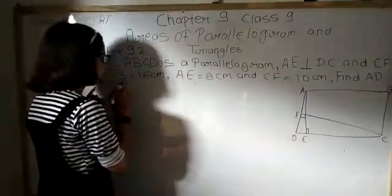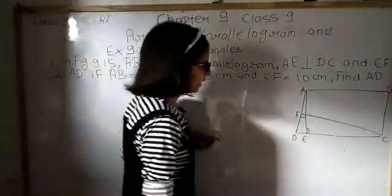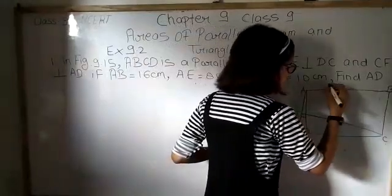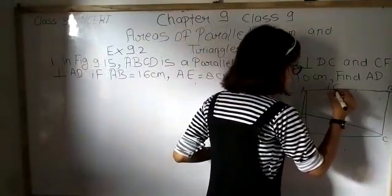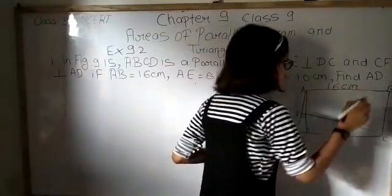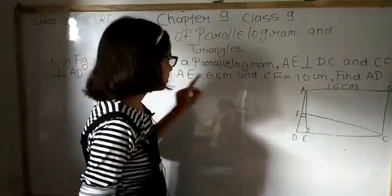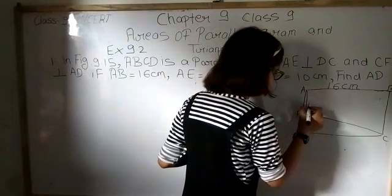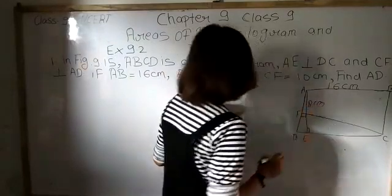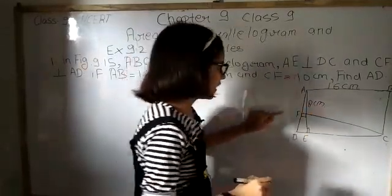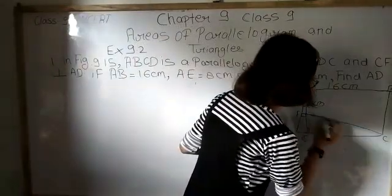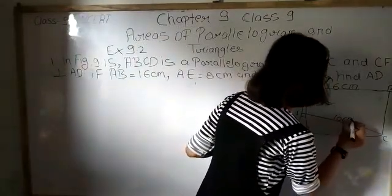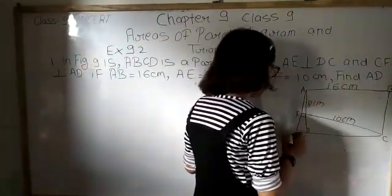If AB equals to 16 centimeter, AE equals to 8 centimeter, and CF equals to 10 centimeter. Find AD.